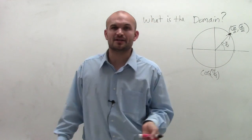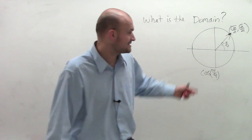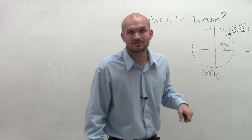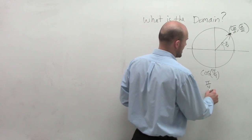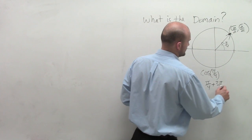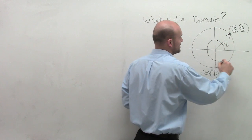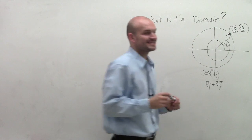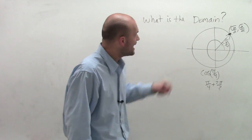And then we said, let's find a coterminal angle, an angle that has the same initial and terminal side. So what we said was you could take pi over 4 and add 2 pi to it. Because when you add 2 pi, you come back to the exact same value.